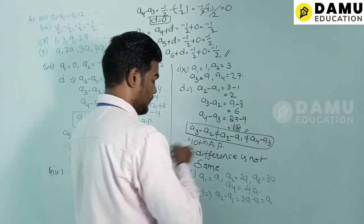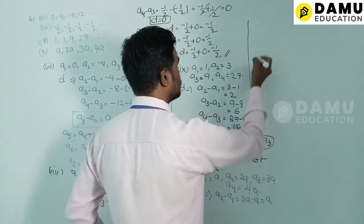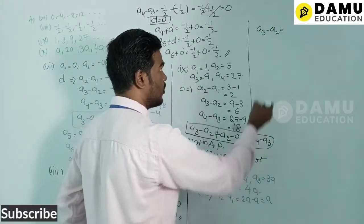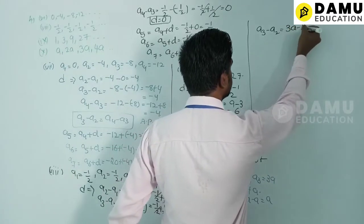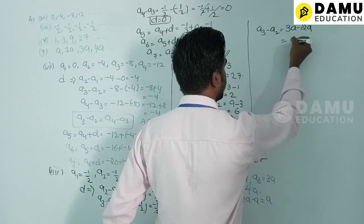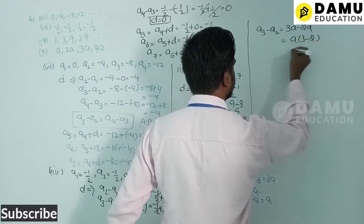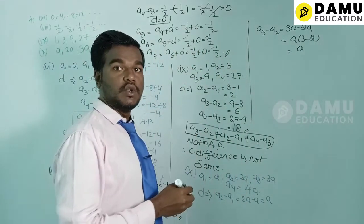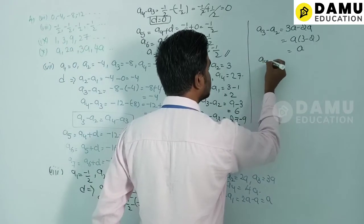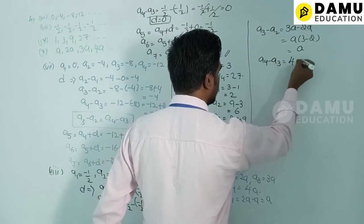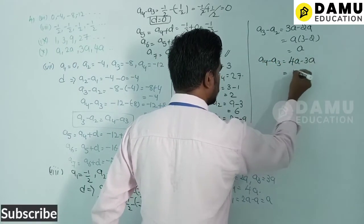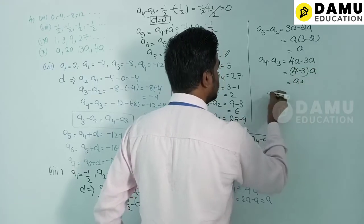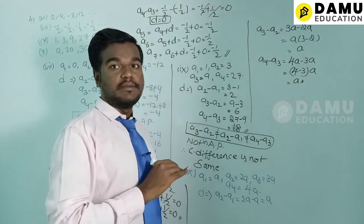Then a3 − a2 = 3a − 2a = a. And a4 − a3 = 4a − 3a = a. The common difference is the same, so this series is in arithmetic progression.